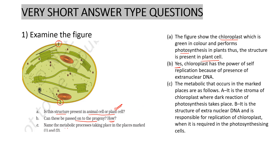Third: name the metabolic process taking place in region one and two. In region one, this is the stroma of the chloroplast where the dark reaction takes place. Number one is stroma, where the dark reaction will occur. Number two is the extra-nuclear DNA, meaning chloroplast DNA, which is responsible for replication so that the chloroplast can produce its own copy and be passed to the progeny cell.